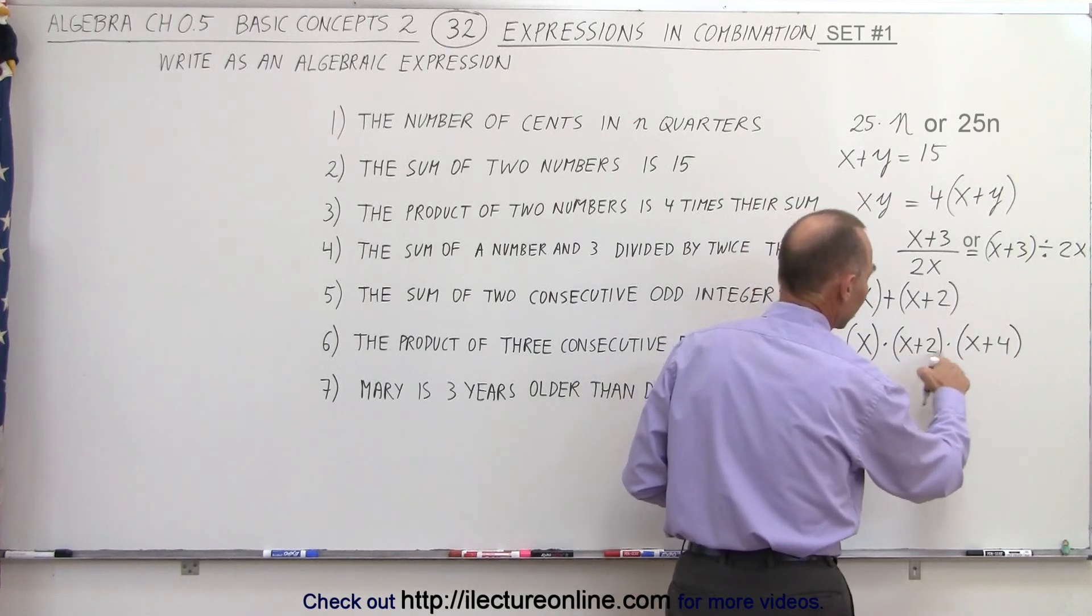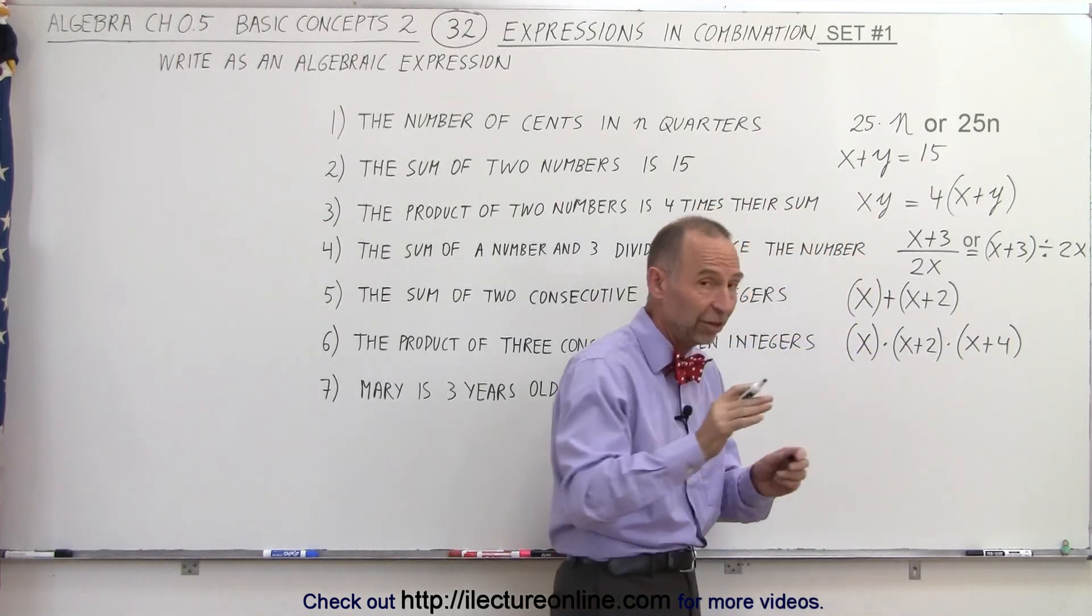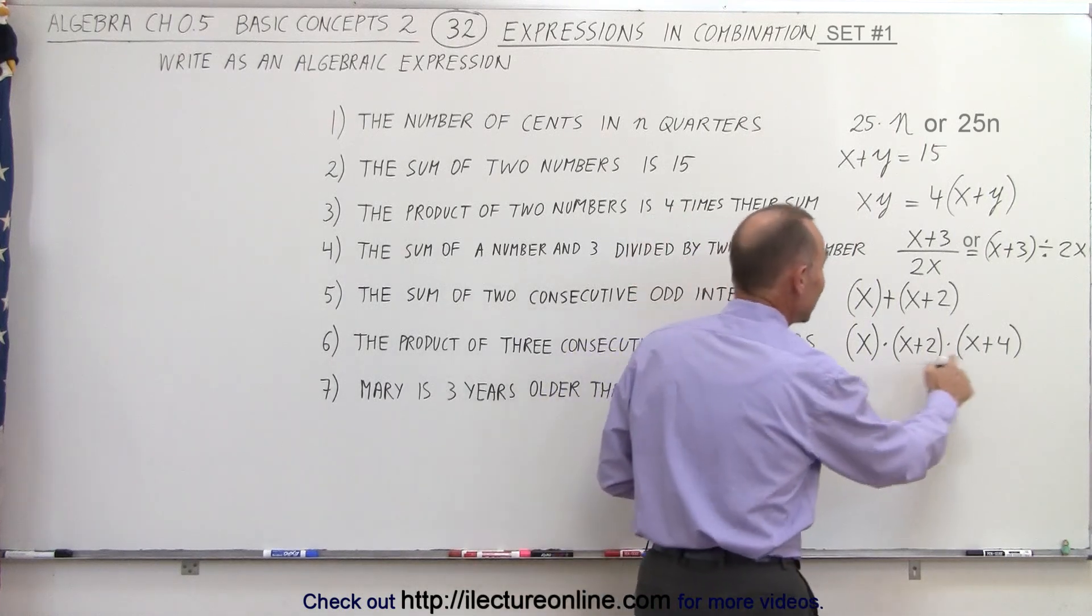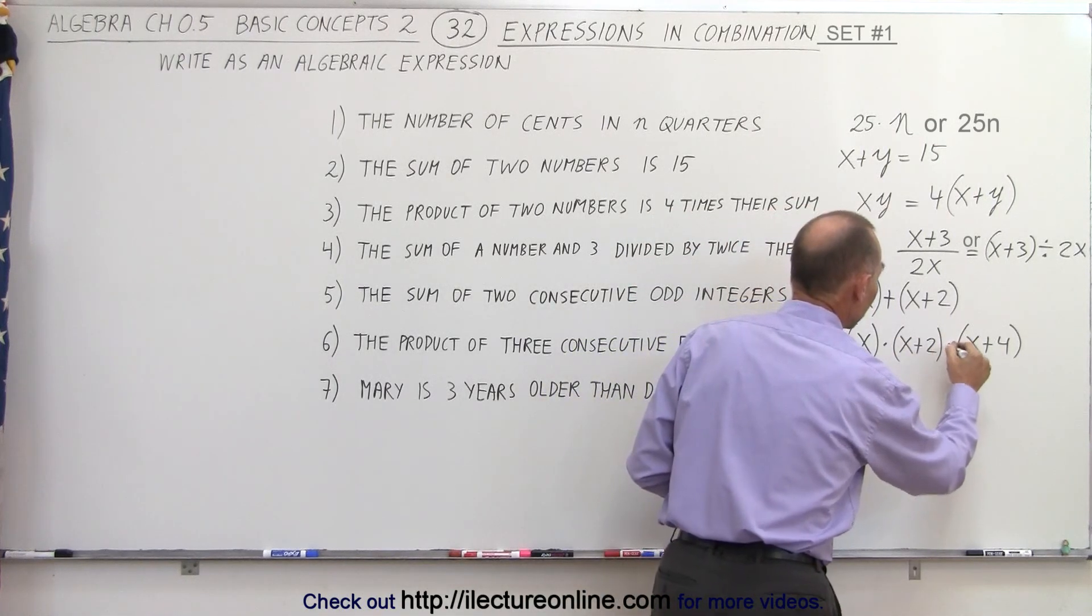Three consecutive integers, in this case even integers. Three consecutive even integers, multiplied together.